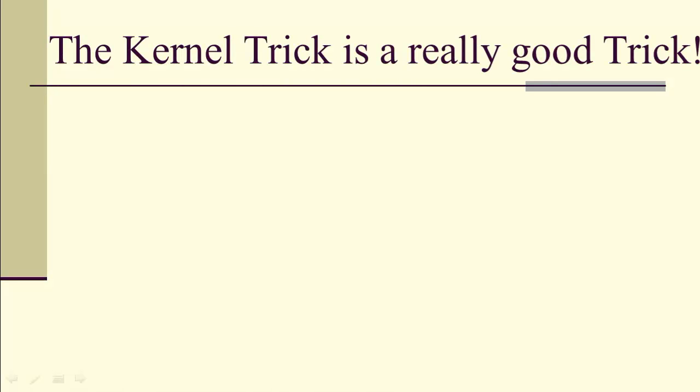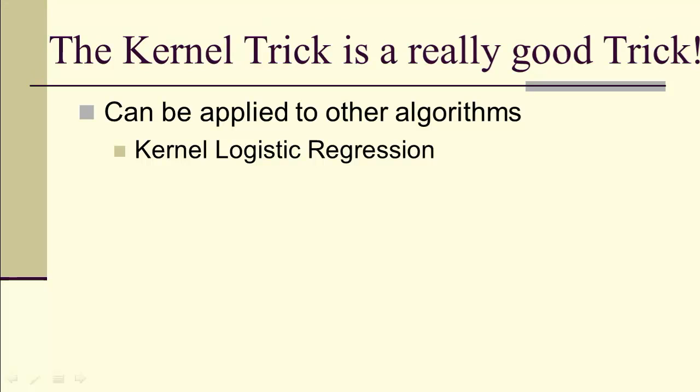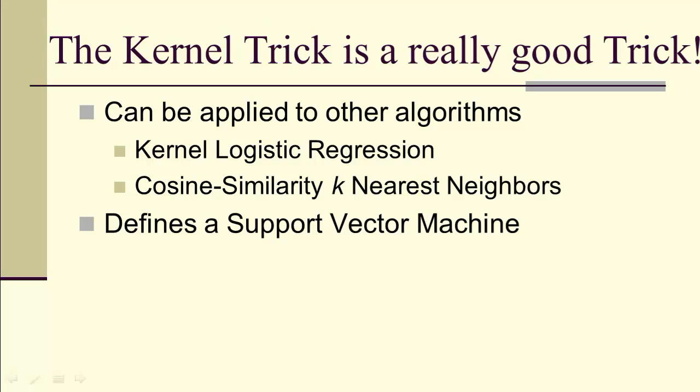The kernel trick. It's a really good trick. It can be applied to other algorithms. We looked already at kernel logistic regression. We could have done a logistic regression in higher dimensions. We could do cosine similarity in higher dimensions by using the trick.